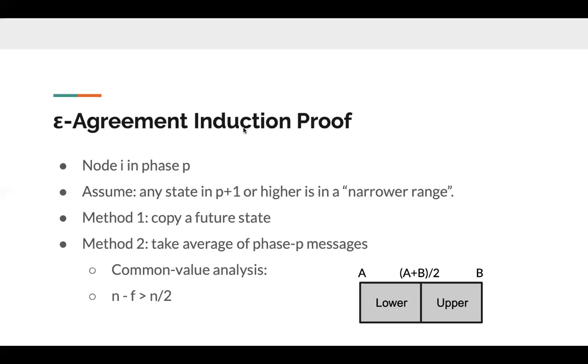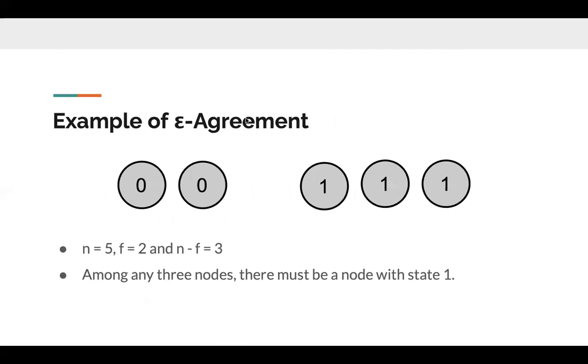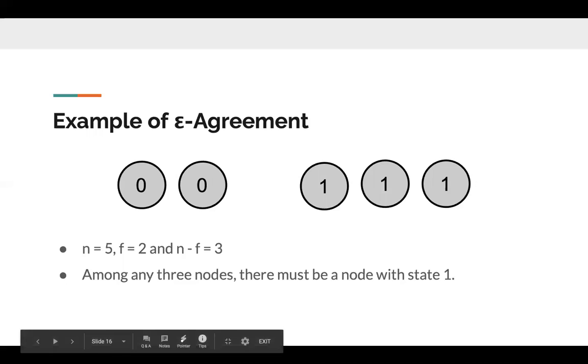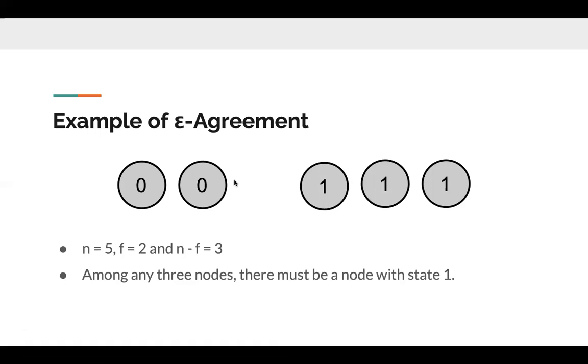We present a simple example to illustrate the proof. So, in this example, we assume that n equals 5 and f equals 2. In a certain phase p, three of them have the local states 1 and the other two nodes have state 0. In this case, the lower half is the two zeros and the upper half is the rest of the ones. The size of lower half is 2, and this is less than n minus f, which is 3.